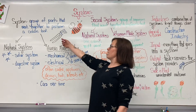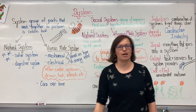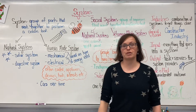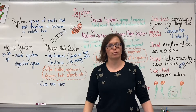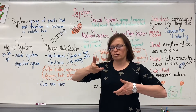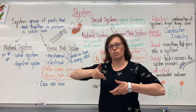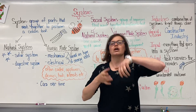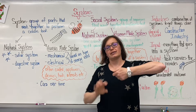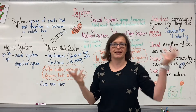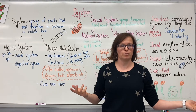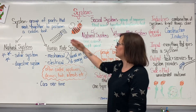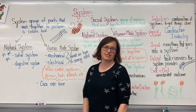My first example is going to be a can opener. If you think about how a can opener works, you turn one thing and other mechanisms start to work to perform the task of opening up a can so that you can get food. That would be an example of a system.